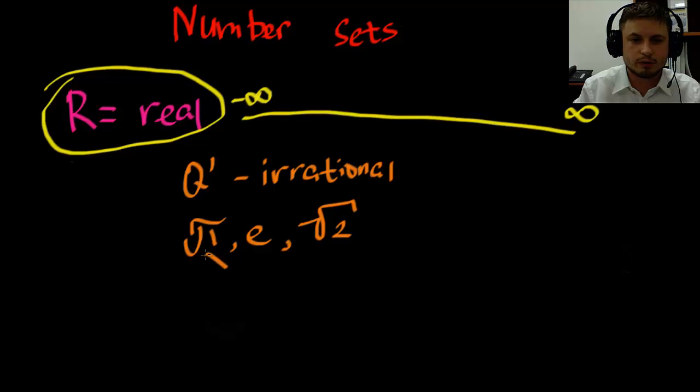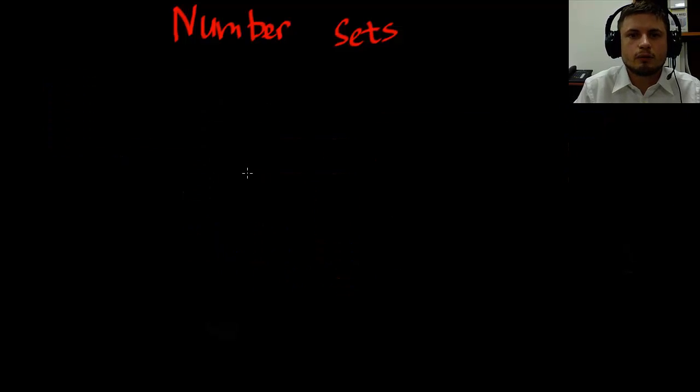So you all know about pi being super long. 3.1459 and it just keeps going and going and never repeats. There's no pattern to it. And that would be an irrational number.